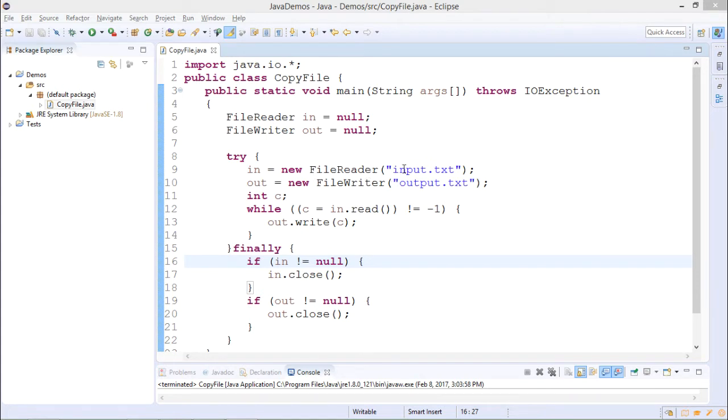FileReader is pointing to input.txt. I have saved it on D drive so I write here D colon backslash backslash. Now using read and write methods I am reading from input.txt and I am writing that into output.txt.